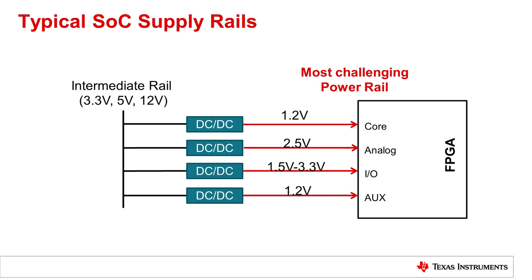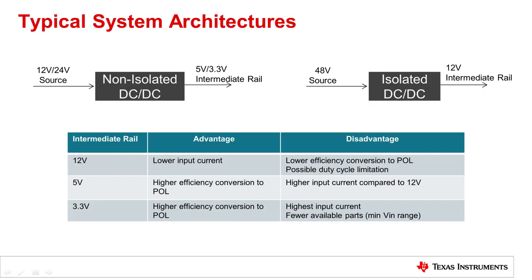A typical system-on-chip configuration and its supply rails will look like in this example. We will most likely find a core voltage to power the processing unit, an analog voltage for analog circuitry, I/O voltages usually placed between 1.5 and 3.3V, and an auxiliary voltage to power auxiliary circuitry like PLLs, peripherals, and control units. These rails must be derived from an intermediate power source, typically a 12V, 5V, or 3.3V voltage rail.